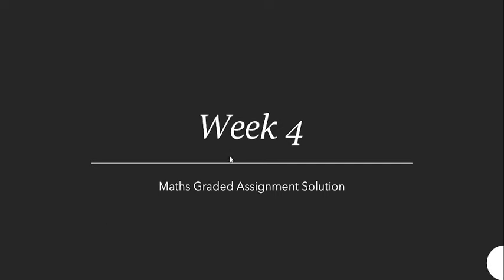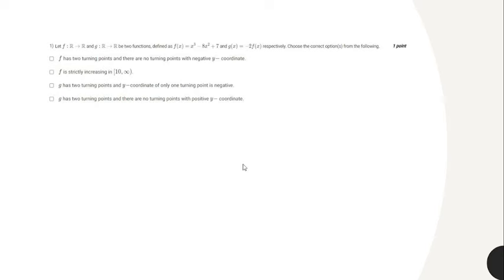Hello learners, welcome to the Week 4 module. Let's begin our discussion with the first question. In the first question there are two functions f and g such that g of x is minus 2 times f of x, and f of x is given by x cubed minus 8x squared plus 7x.